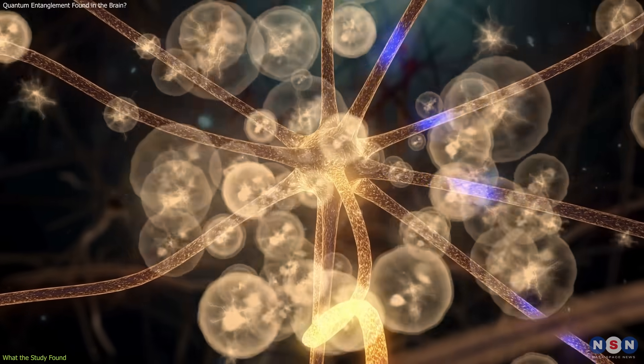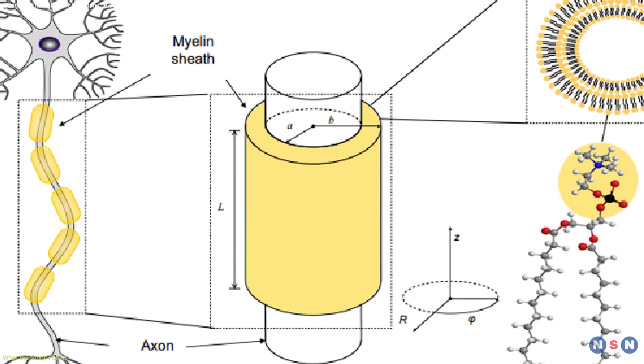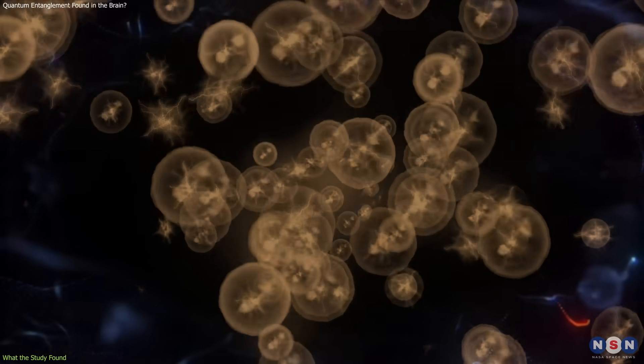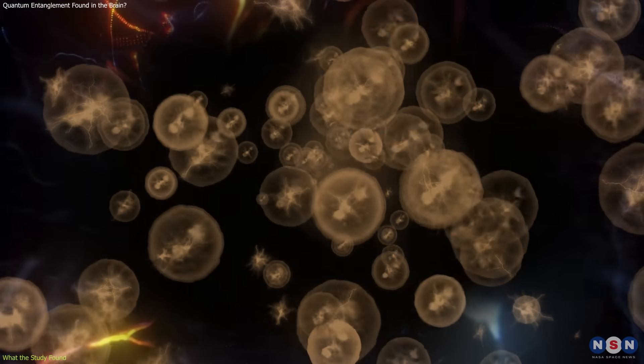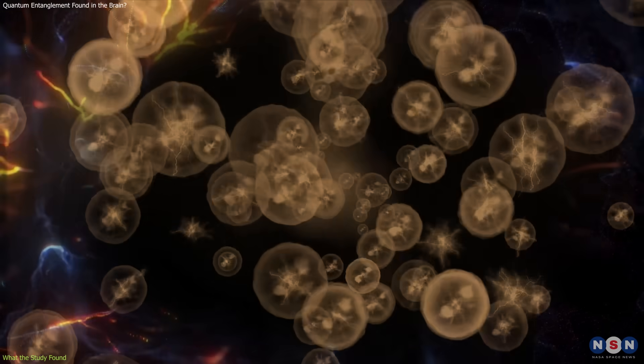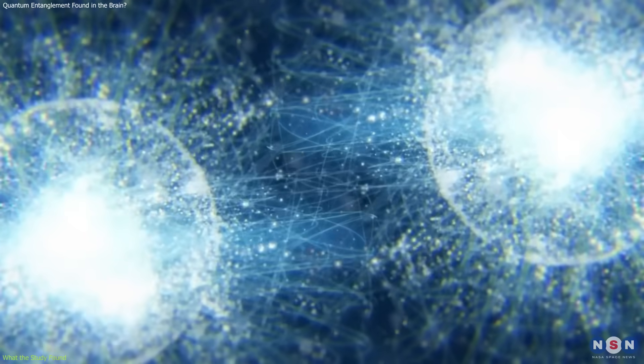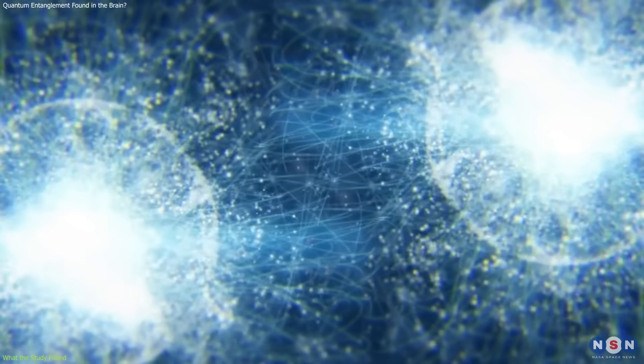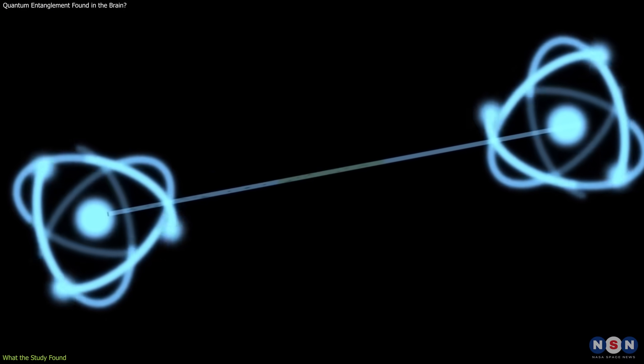Those vibrations emit infrared photons. Due to the cylindrical geometry of the sheath, these emissions could take place inside what is effectively a natural optical cavity. Under the right conditions, photon pairs could emerge, some of which would be entangled.